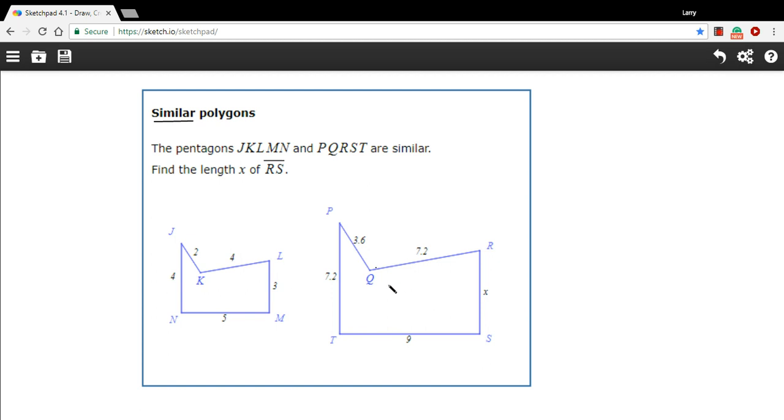So if this one's twice as big, each side is twice as big. That's not actually correct. It's not twice as big. It's some other number. But all of the sides are proportional to each other.